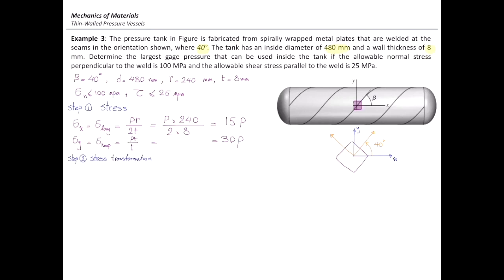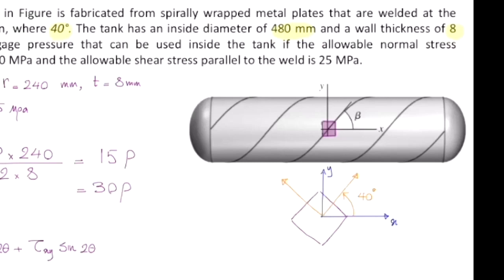The stress transformation equation gives the stress in the n direction as (σx + σy)/2 + (σx − σy)/2 · cos(2θ) + τxy · sin(2θ). There is a question about what theta to use. Let me call the axes n and t. I need to determine the stress in the t direction, because the allowable normal stress of 100 MPa is perpendicular to the weld, and perpendicular to the weld is the t axis.